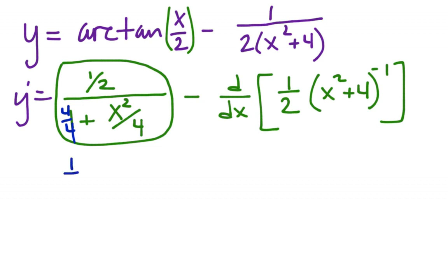or 1 half times 4 over 4 plus x squared. And then I can reduce this and get the 2. All right, so that works for now.